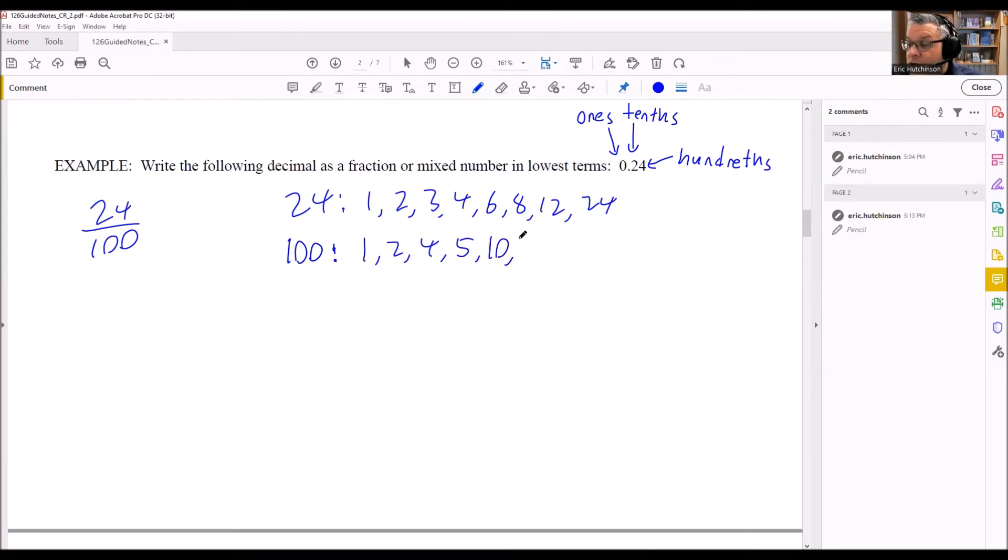And then we keep on going with that. So it's going to be 20 would be the next one. Hundred doesn't divide by any teens, any of those. And then we have 25 divides in there evenly, and then we have 50, and then we have 100.